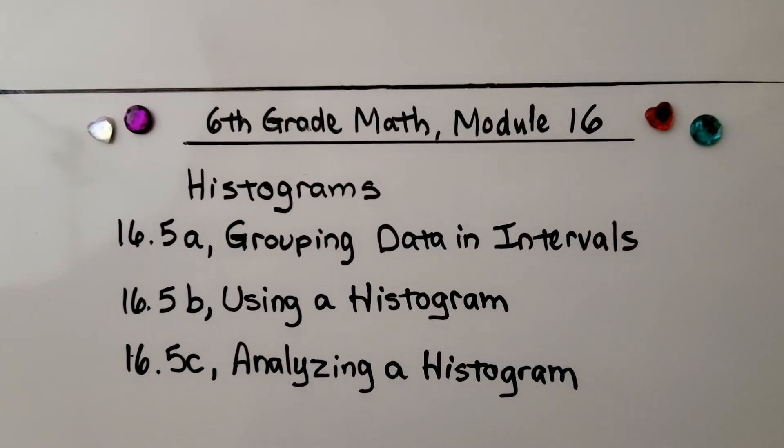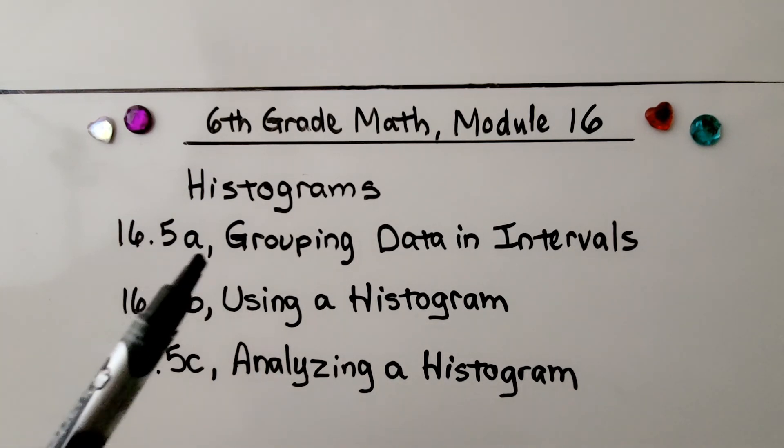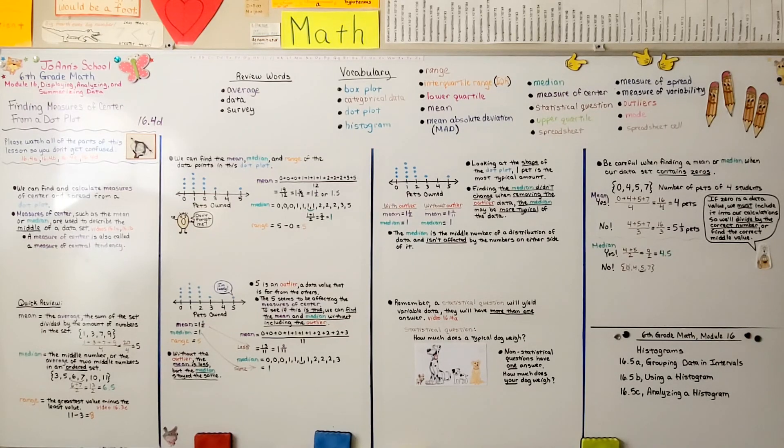We're finished with lesson 16.4. We're going to do 16.5, which is split into three parts and is about histograms. We're going to learn about grouping data in intervals. Remember, when finding measures of center like a mean or median, count those zeros. They're important. And remember, a statistical question has more than one answer. Have a great day, and I hope to see you for 16.5.